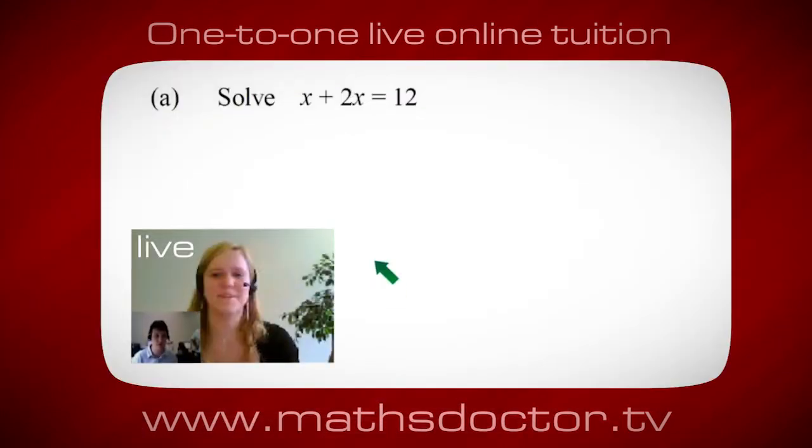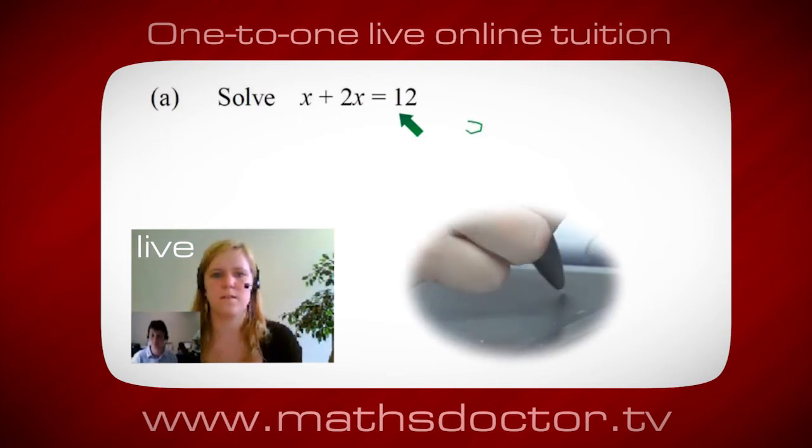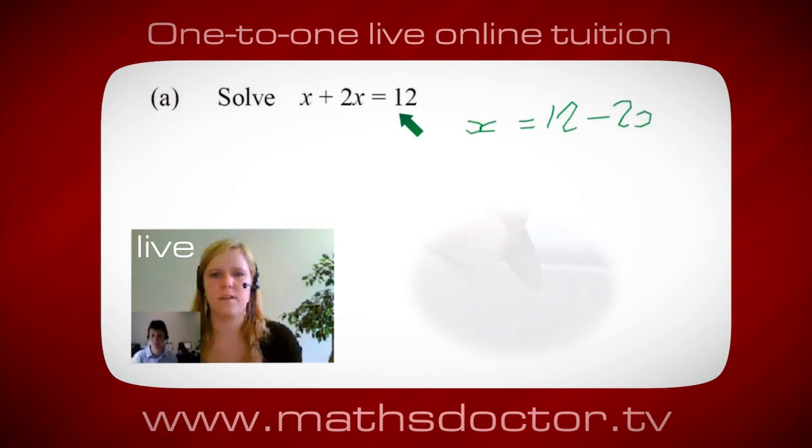Okay Marie, let's have a look at this one. Solve x + 2x = 12. What do you think you do first? Well, I want x on its own, so I would put x = 12 - 2x.